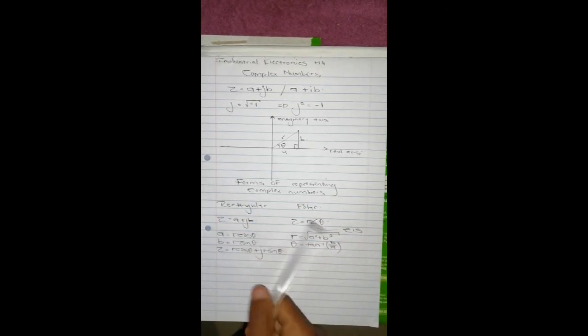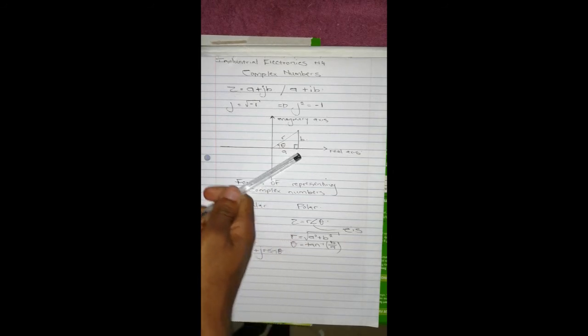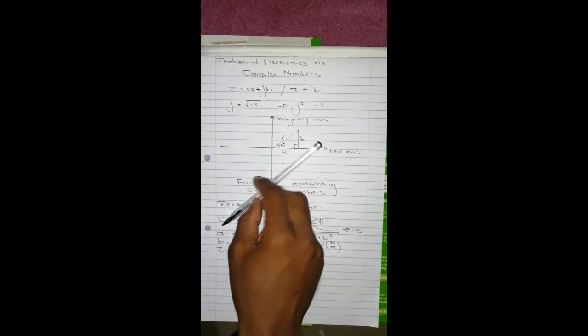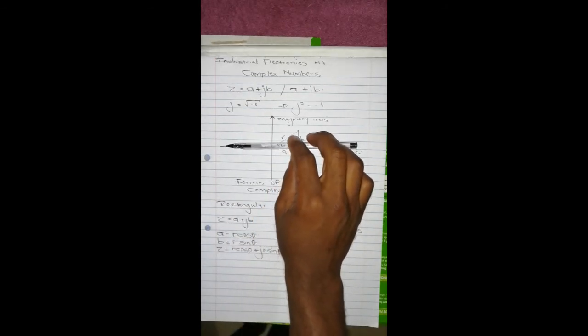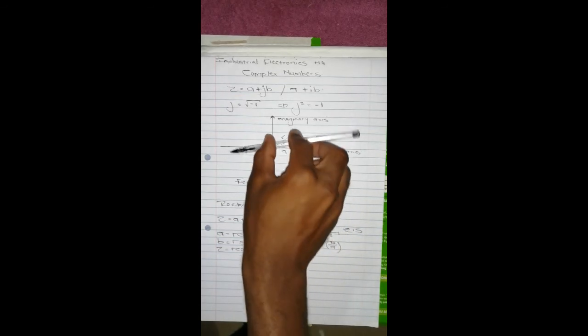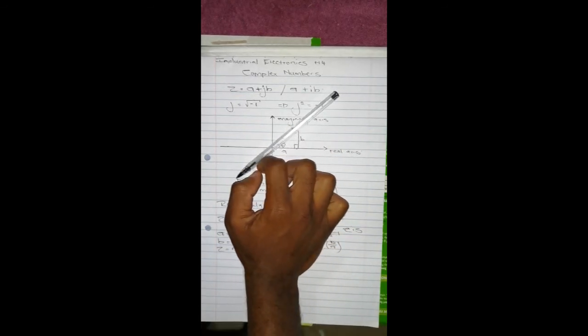And another thing is that this 'j' represents the phase shift or the rotation of our number from the real axis. Because when a number is in the real axis we say it's in phase, but when it moves it becomes out of phase, and the 'j' represents how out of phase it is.